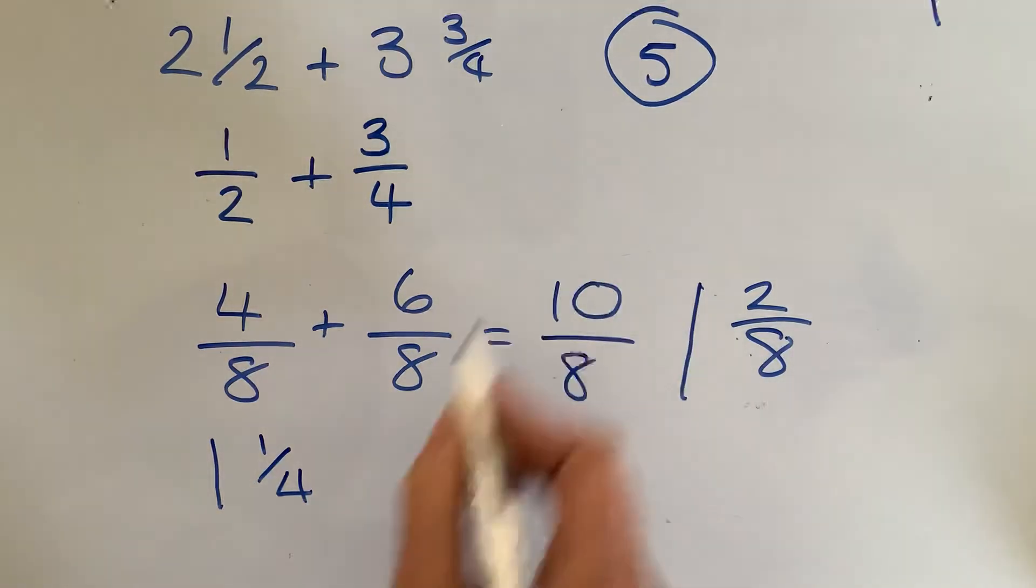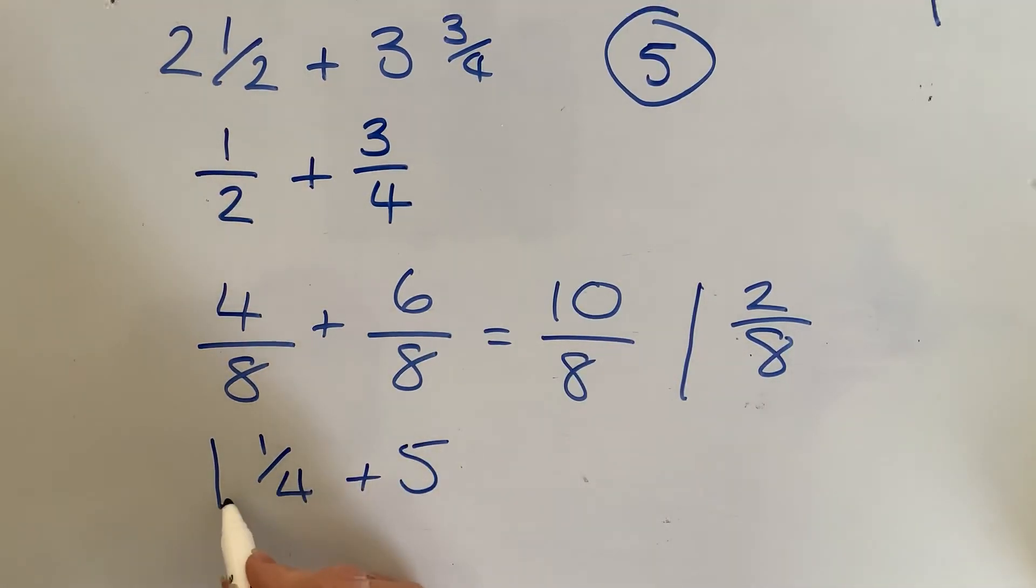So now all I have to do is add that onto my 5, don't need to do too much to that, 5 add 1 is 6, so I've got an answer of 6 and a quarter.